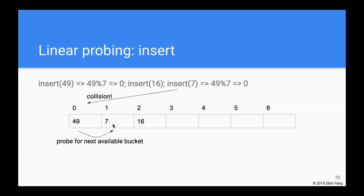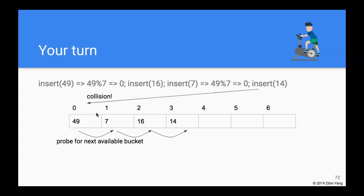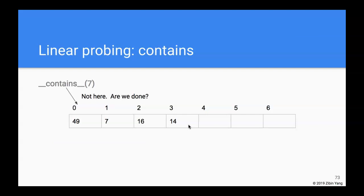So we put 7 in the next bucket. Now, what happens when we insert 14? 14 also hashes to bucket 0. We keep looking at the next bucket, then the next, until we find one that's not occupied, and we put 14 there. Now let's look at the contains operation — what happens when we're trying to find if the number 7 is in the table?